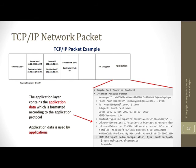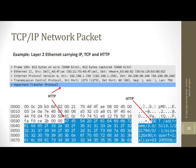The application layer obviously has all the app data as well — not to lose sight of the most important part of that layer. In this example, we can see that the application layer started immediately after the end of the TCP header, because TCP is carrying the HTTP in this particular example.